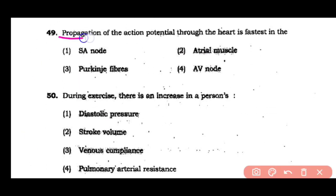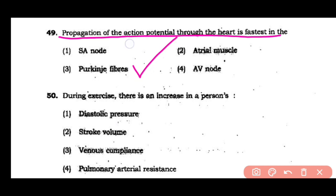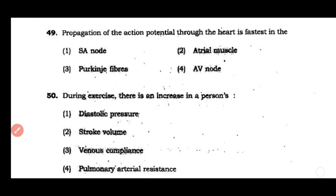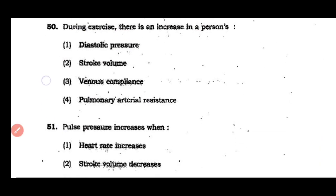Question number 49: Propagation of the action potential through the heart is fastest in SA node, atrial muscle, Purkinje fibres, or AV nodes. The correct answer is option 3 — the propagation of action potential is fastest in Purkinje fibres.